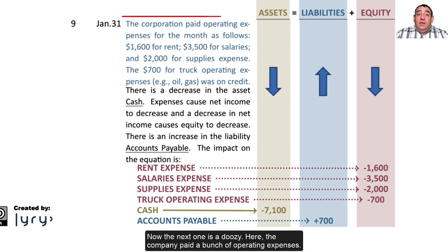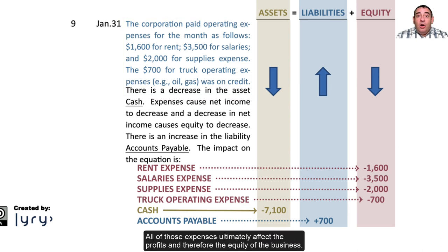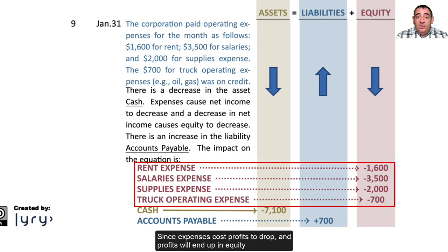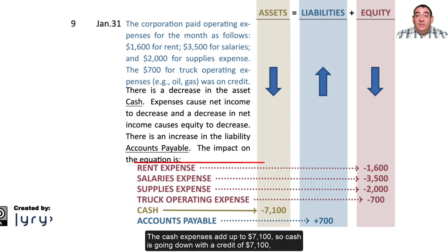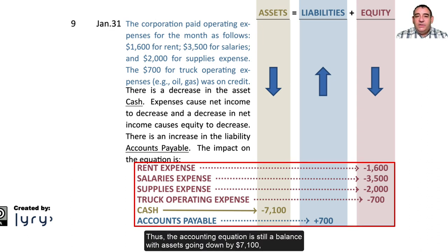The company then paid a bunch of operating expenses: $1,600 for rent, $3,500 for salaries, $2,000 for supplies expense — all paid in cash — and $700 for truck operating expenses on credit. All of those expenses ultimately affect profits and therefore the equity of the business. Since expenses cause profits to drop and profits end up in equity, equity decreases, so those would all be debits to their respective expense accounts. The cash expenses add up to $7,100, so cash goes down with a credit of $7,100, and the truck expense creates a liability of $700 in accounts payable, which is going up. The accounting equation remains in balance, with assets going down by $7,100, liabilities increasing by $700, and equity dropping by $7,800.